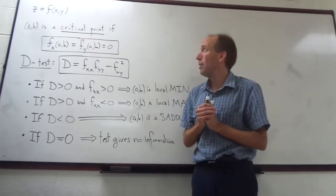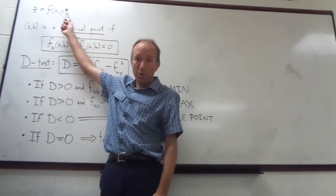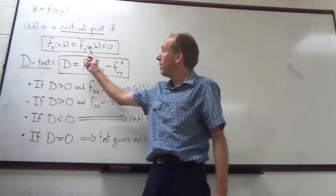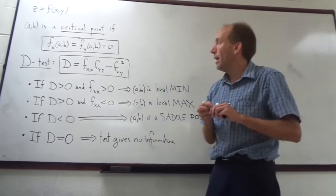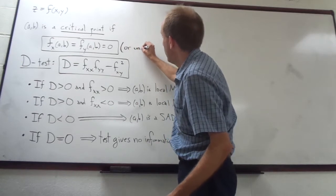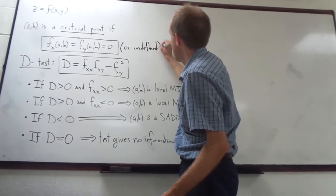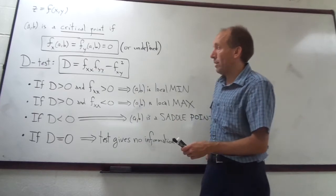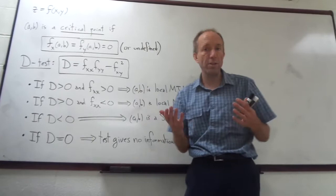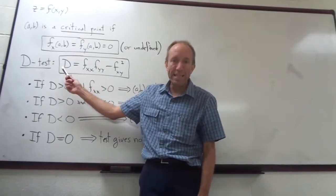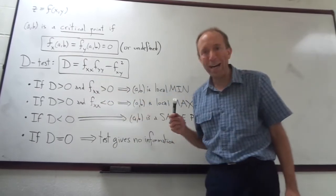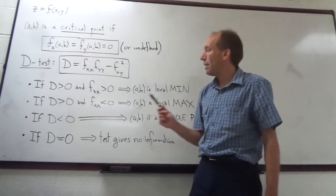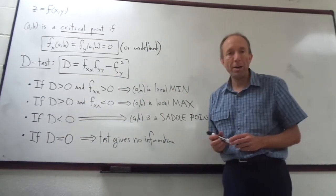We were talking about this in class on the Thursday before the break. If we have a function of two variables, we're looking for what we call the critical points — those are the points (a, b) where both partial derivatives f_x and f_y are equal to zero, or undefined. Wherever the partial derivatives are either zero or undefined, we have a critical point. Once we find our list of critical points, we have the D-test, or the second derivative test, where we calculate D = f_xx times f_yy minus f_xy squared, and we plug in our critical points into that expression.